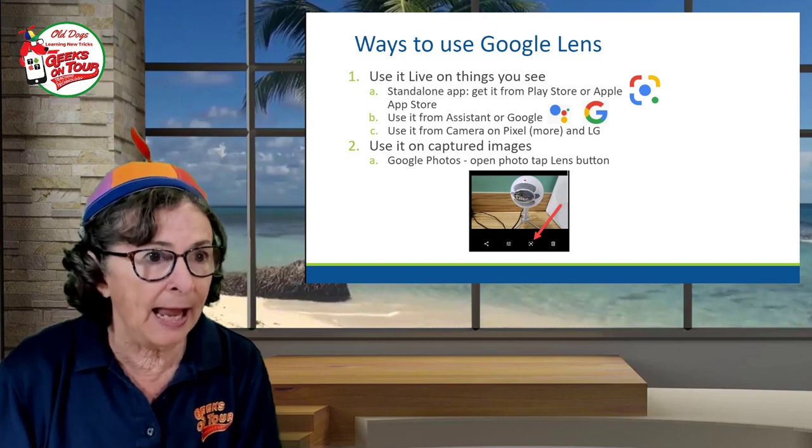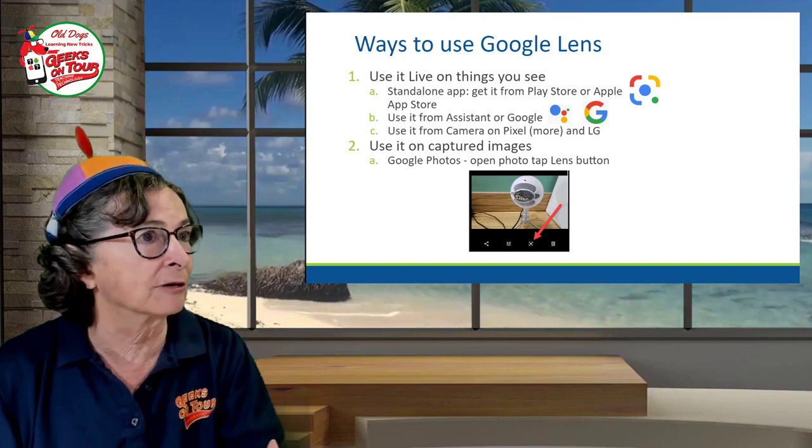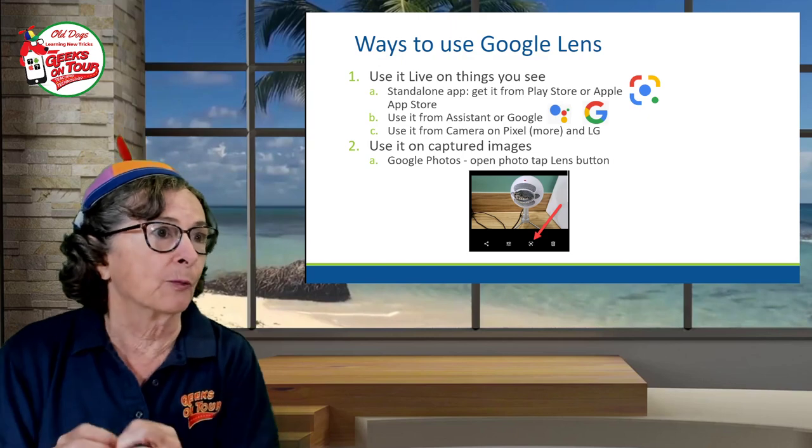If you have a Pixel 4 like Jim does, you can do it straight from your camera — just open the camera app, tap more and lens. We did this when we were in Europe. We were in Italy and the signs were in Italian, and we wanted to know what a sign said without taking a picture to study later. You just open up Google Lens, point your phone at the sign, and it will translate. We did that in Croatia too, in the grocery store. Lens will translate — it works together with Google Translate.